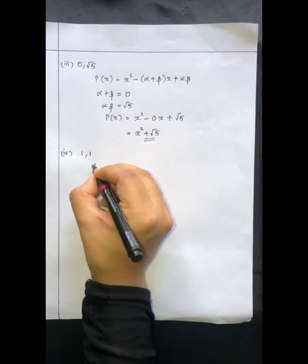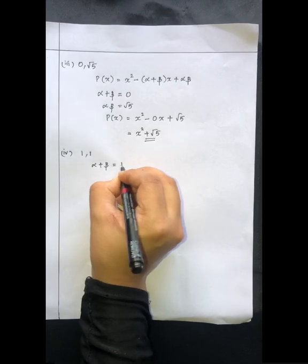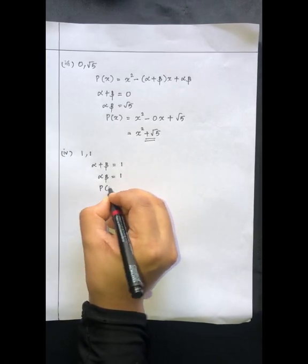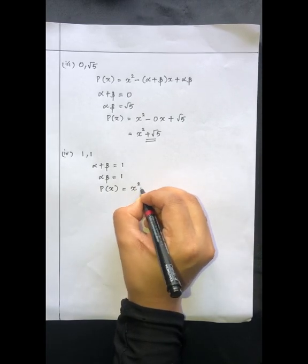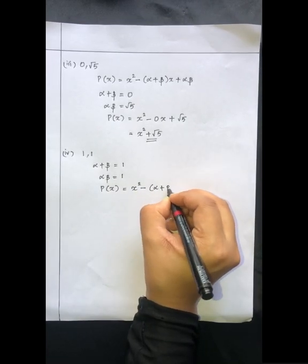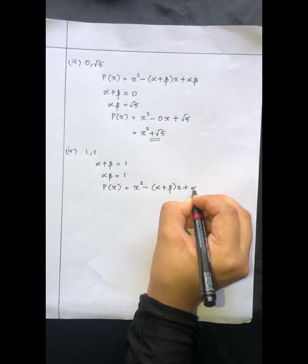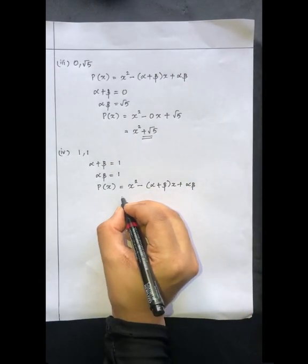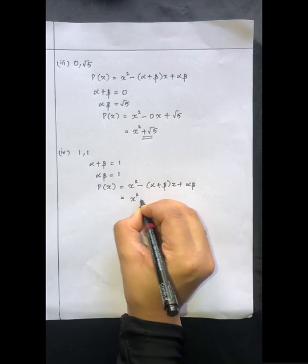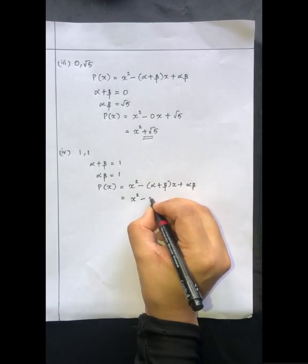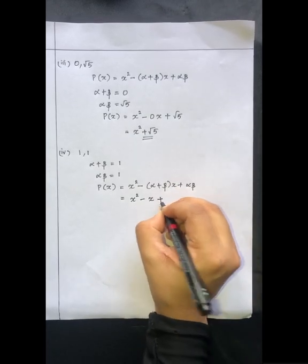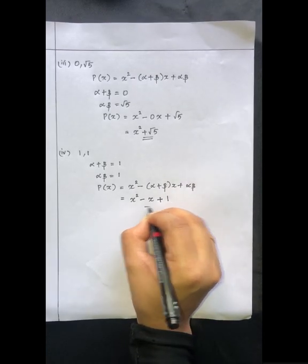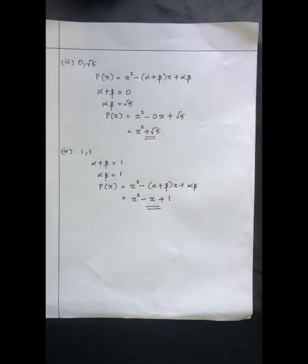For the fourth sub-question, alpha plus beta equals 1 and alpha into beta equals 1. We substitute both values into the equation p(x) = x² minus (alpha plus beta) into x plus alpha into beta. So x² minus 1 times x plus 1, giving the required polynomial x² minus x plus 1.